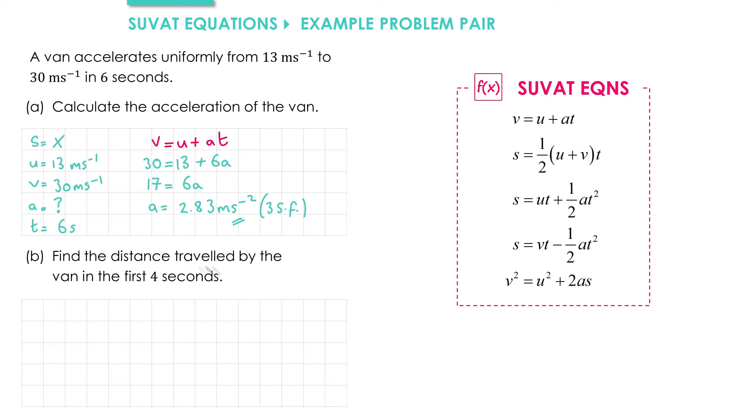In part B, I need to find the distance traveled by the van in the first four seconds. Although this is the same van that is accelerating, because some of the values have changed—6 seconds in the first part and 4 seconds in the second—we have to be careful when we write down our SUVAT values. The initial velocity stays the same at 13 meters per second, but the final velocity is no longer valid. We can add in the time of 4 seconds, and because the acceleration is constant throughout, we can use the value calculated in part A, which is 2.83 meters per second squared.